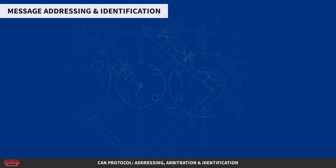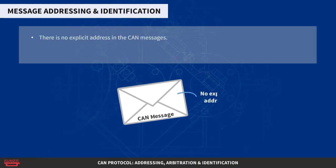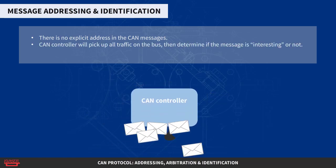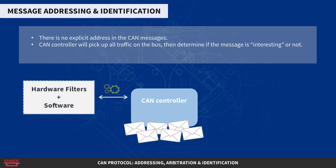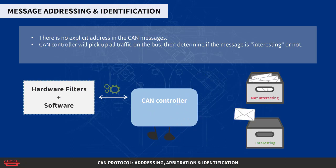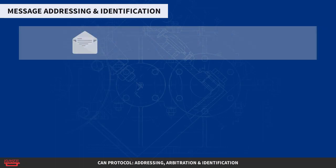Message addressing and identification. It is worth noting once again that there is no explicit address in the CAN messages. Each CAN controller will pick up all traffic on the bus, and using a combination of hardware filters and software, determine if the message is interesting or not. In fact, there is no notion of message addresses in CAN. Instead, the contents of the messages are identified by an identifier, which is present somewhere in the message.